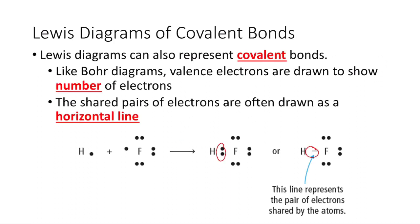Lewis dot diagrams of covalent bonds. This will make your life a lot easier than Bohr models. Lewis dot diagrams can also represent covalent bonds. Like Bohr diagrams, valence electrons are drawn to show the number of electrons. The shared pairs of electrons are often drawn as horizontal lines. So once we pair up the electrons when they're shared, we draw a horizontal line. No square brackets needed here because it's a covalent bond. No electrons are being lost or gained - they're only being shared.